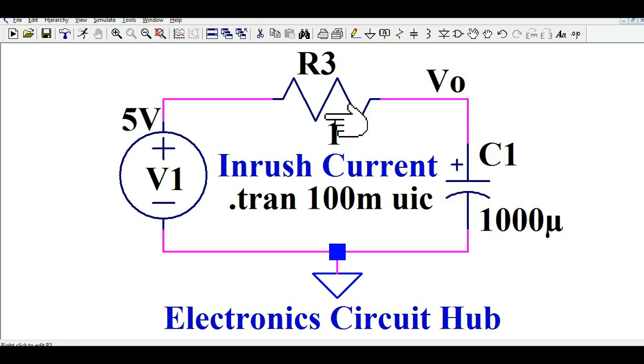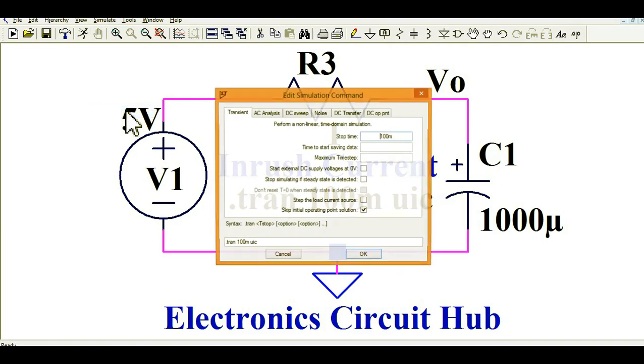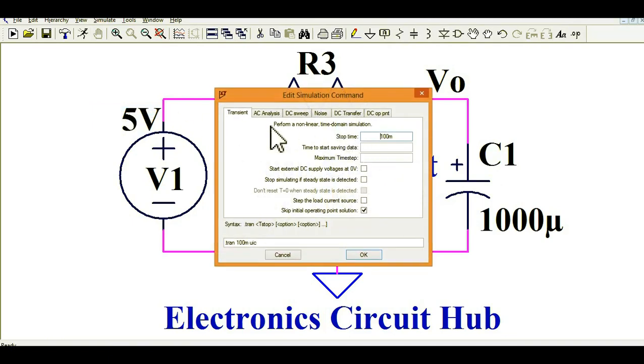What you need to do is go to simulate, then edit simulation command. I selected the transient, then stop time 100 ms. It is very important to take this skip initial operating point solution. You have to take this.